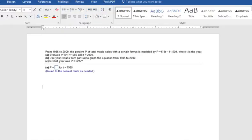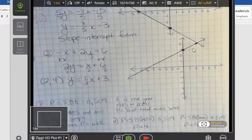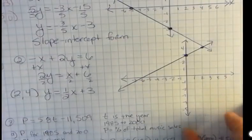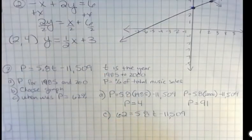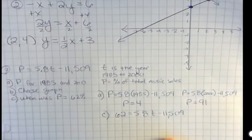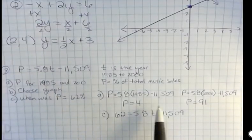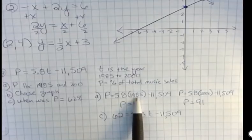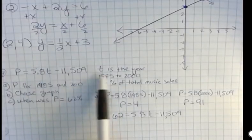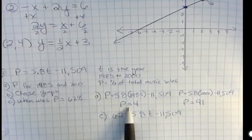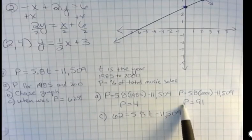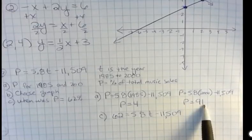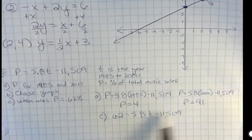So I'm going to show you how to do that problem. Here's our equation: P equals 5.8T minus 11,509. To figure out what percent it was in 1985, we're going to plug 1985 into the equation that they gave us. They said that time was the year, so 1985, and simplified using my calculator, I got the percent was 4. Now the percent from 2000 was 91. So obviously, this percentage of this format was rising.